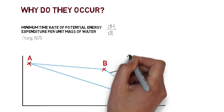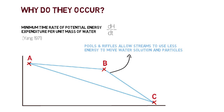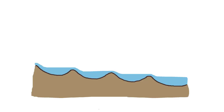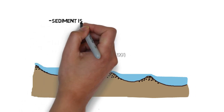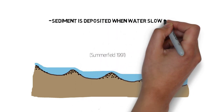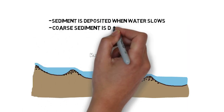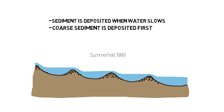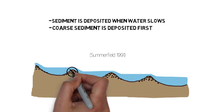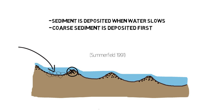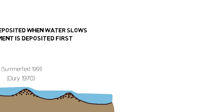So pools and riffles help rivers conserve energy. But there is some confusion surrounding how rivers maintain that pool-riffle sequence. Riffles are made up of coarser sediment than pools, and we often see water flowing quickly over riffles and barely moving in pools. But sediment is deposited when water flows slowly, and coarser sediment is deposited before finer sediment. So if water flows slower in pools, why isn't the stream eroding the riffles and depositing coarse sediment into the pools? Pool-riffle sequences actually last a very long time, so there must be some mechanism that maintains them.